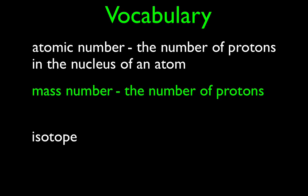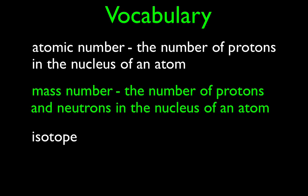The mass number is the number of protons and the number of neutrons. It's some whole number — you add up the number of protons and the number of neutrons, you get the mass number. Please remember, the mass number is not the mass of an atom or the mass of an element. It's called the mass number because it's the number of protons and neutrons, and it's the protons and neutrons that really contribute to the mass of an atom.